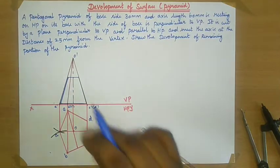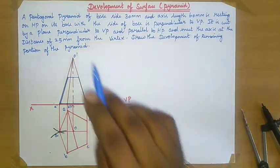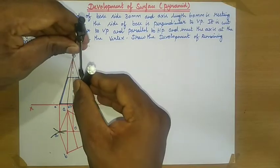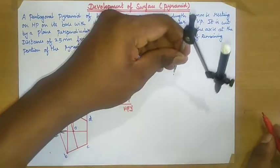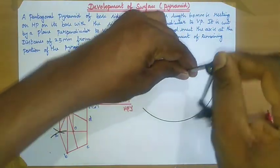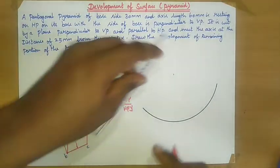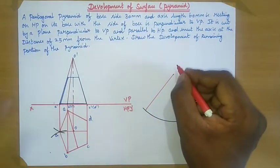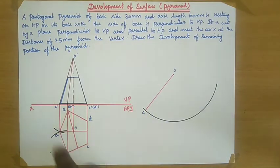Now for the development: draw the remaining portion of the pyramid. In order to draw the remaining portion, take the measurement of O-dash to A-dash, mark one point, and with this point as center draw an arc. Place your scale at this point, draw one line, and mark this point as O and A.